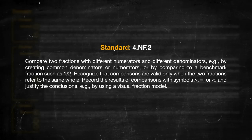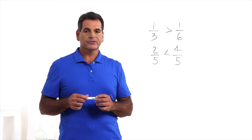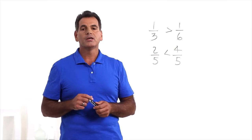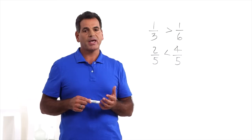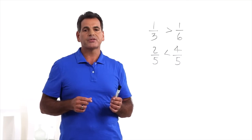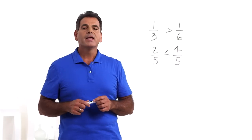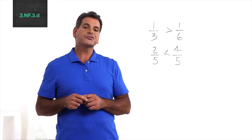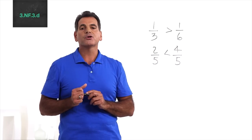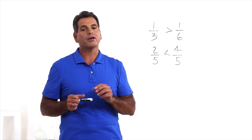Now on to standard 4NF2. Now that students understand fraction equivalency, they can use that knowledge to compare two fractions. Comparing fractions can be done two ways: either by comparing them when their denominators are the same, or comparing each to benchmark fractions they are familiar with, such as one-half. In previous grades, students learned to compare fractions with the same numerator or same denominator. They also learned that one-third is greater than one-sixth, because the larger the denominator, the smaller each part of the fraction is.